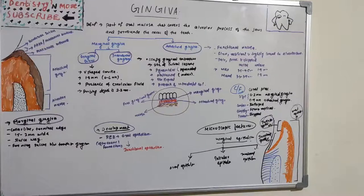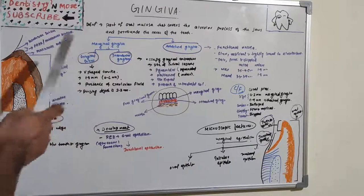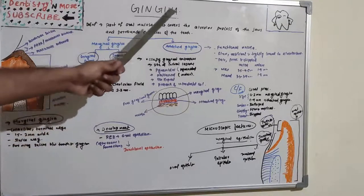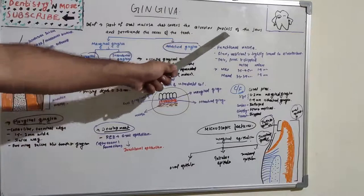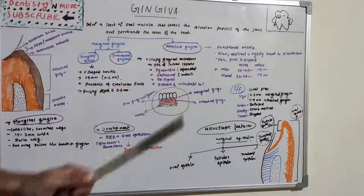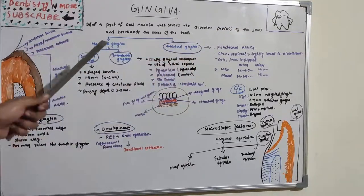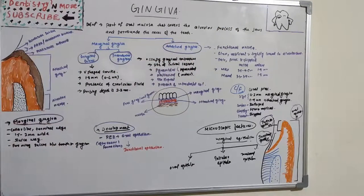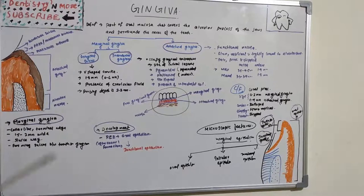As per definition, Gingiva is a part of oral mucosa that covers the alveolar process of jaws and surrounds the neck of the teeth. It is a covering of alveolar bones and surrounds the neck of teeth.